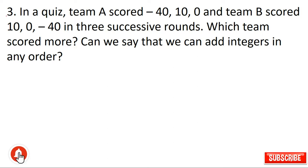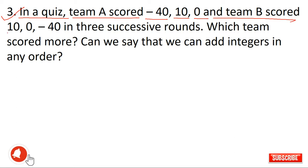Let's see question number 3 of exercise 1.2. The question is: in a quiz, team A scored minus 40, 10, 0 and team B scored 10, 0, minus 40 in 3 successive rounds. Which team scored more?